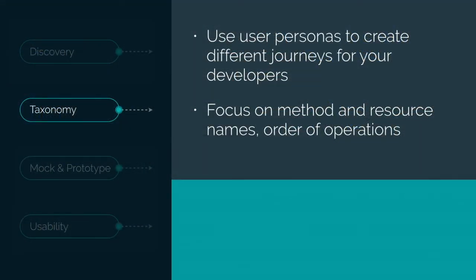The second piece is taxonomy — think about navigation, how personas apply, what an individual is looking for. You know what the API is supposed to do, so now you're digging into: what are the method names, how are we going to name our resources, what are the big-level steps users will go through? You want to sit down with developers, ideally from different companies who have no idea what you're building, or at least from a completely different department unfamiliar with your products. Techniques used here include card sorts and tree testing.